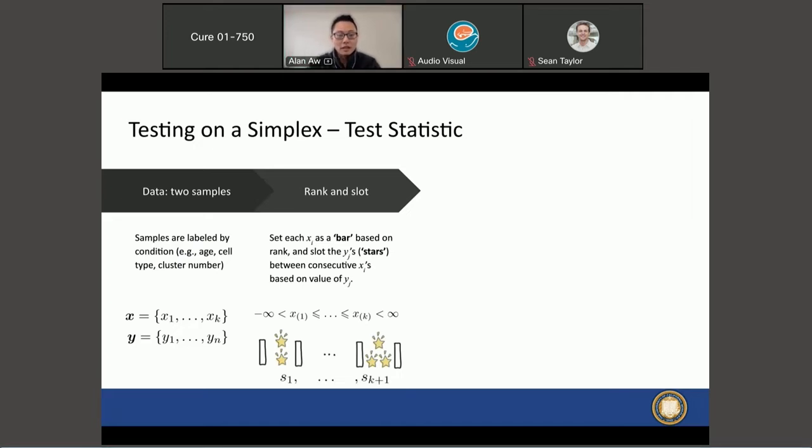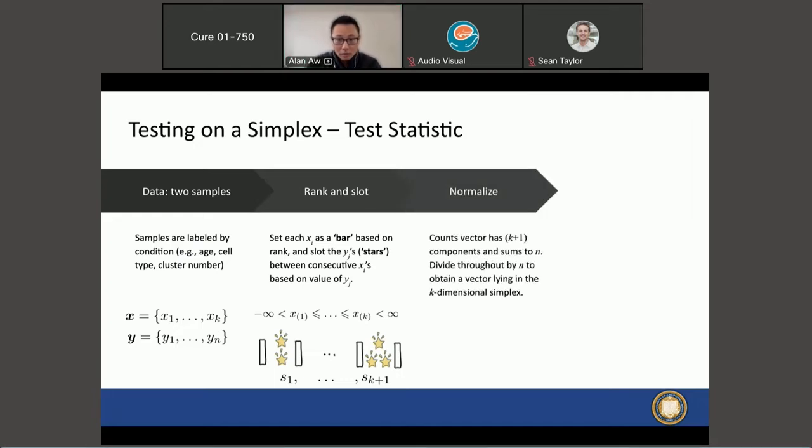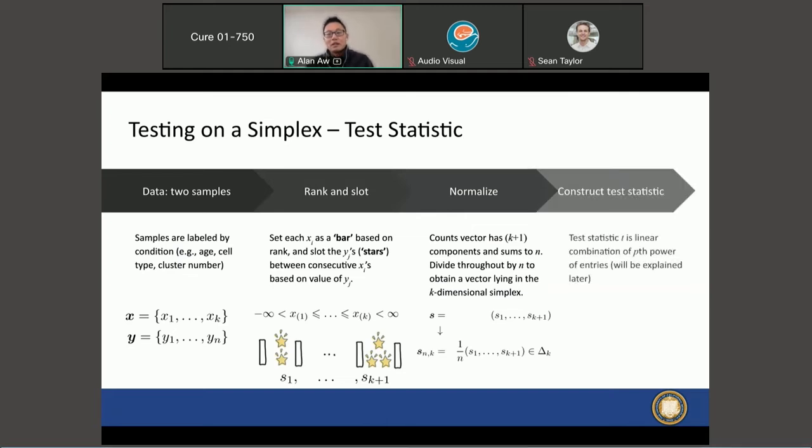From this procedure we get a counts vector where we have s1 as k plus one counting the number of y_j's contained between two bars. This counts vector sums to n, so we divide throughout by n to get a vector that lies in the simplex. Then finally, we construct a test statistic by taking some linear combination of the p-th power of the entries of this vector.